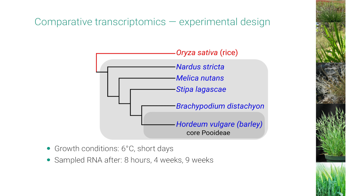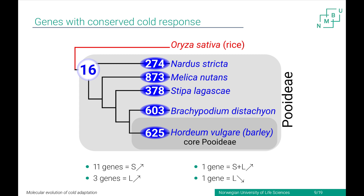We picked five distantly related species from the Poidae subfamily: three species from early diverging lineages, the model grass Brachypodium distachyon, which is the sister species to the clade called core Poidae — a species-rich clade containing all the economically important species — and we used barley as a reference. We grew those five species at six degrees Celsius on short days and sampled RNA after eight hours, four weeks, and nine weeks, giving us measurements of gene expression after a short cold shock and after a long-term cold treatment. We then did differential gene expression and compared the genes that were conserved.